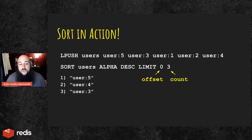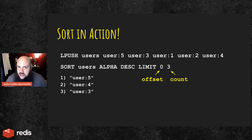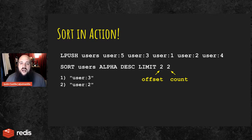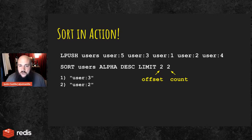For example, descending with a limit: I wanted to get a total of three from the beginning — user five, user four, user three. Another example: descending with an offset of two and a count of two skips user five and user four, giving me user three and user two.